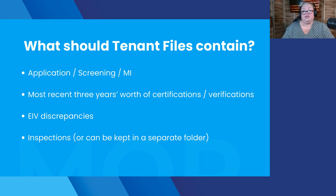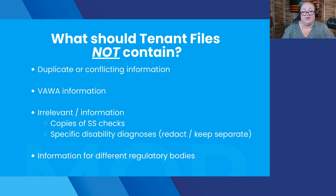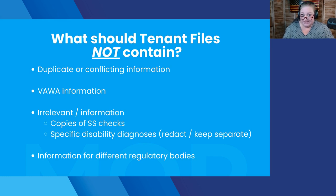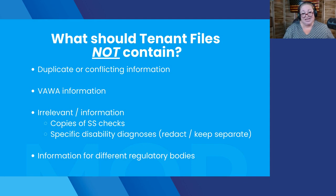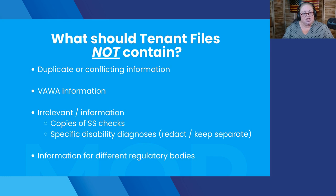There are some things that should really not be in your tenant file. You do not want duplicate or conflicting information — this is a common source of questions and potentially findings at your MOR. For instance, if the tenant gave you their yearly social security statement and you also pulled EIV, and the social security benefit letter says $1,000.10 while the EIV report says $1,000, that's conflicting information. As long as the information is accurate in EIV, that's what you should use, and you can get rid of anything that conflicts just by virtue of having pennies difference.